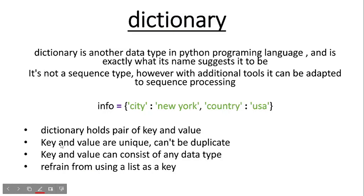We have a data type in Python called dictionary, and it's exactly what its name suggests it to be. It's not a sequence type, however with additional tools it can be adapted to sequence processing.